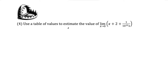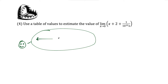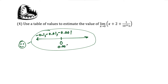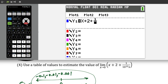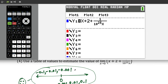Question 4, our last question: we're going to use a table of values to estimate the value of the limit as x approaches 0 of this function. Thinking of the number line in the neighborhood of 0, we want to get as close to 0 as possible from the left and right. From the left: negative 0.1, negative 0.01, negative 0.001. From the right: 0.001, 0.01, and 0.1. In the y equals, we have x plus 2, plus a fraction of 1 over 10 to the 25th times x.